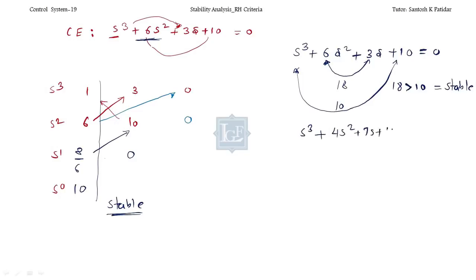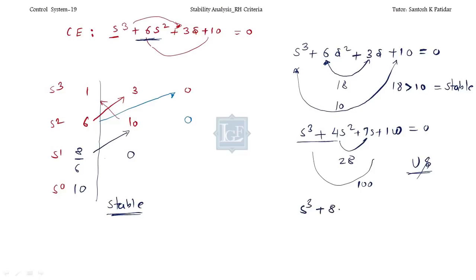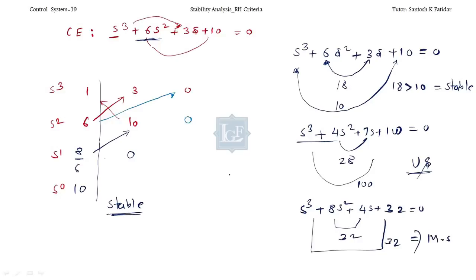For a counterexample: s³ + 8s² + 4s + 100 = 0. Here the inner product is 8×4 = 32 and the outer product is 1×100 = 100. Since 32 < 100, the system is unstable — you can verify by building the full RH table and finding a sign change. If both products are equal, such as s³ + 8s² + 4s + 32 = 0 where inner = outer = 32, the system is marginally stable.